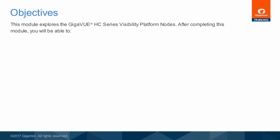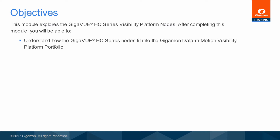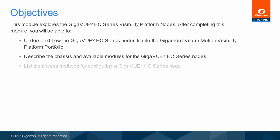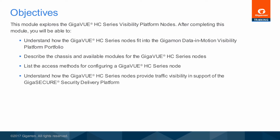After completing this module, you will be able to understand how the Gigaview HC Series Nodes fit into the Gigamon Data in Motion Visibility Platform Portfolio, describe the chassis and available modules for the Gigaview HC Series Nodes, list the access methods for configuring a Gigaview HC Series Node, and understand how the Gigaview HC Series Nodes provides traffic visibility in support of the Gigasecure Security Delivery Platform.